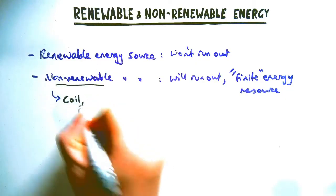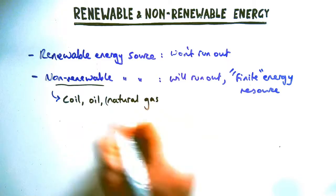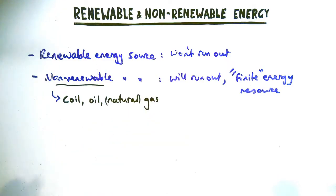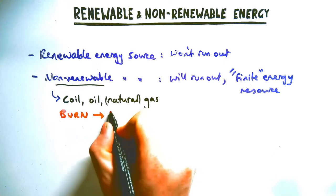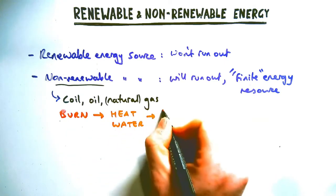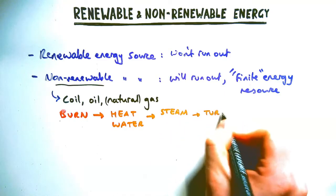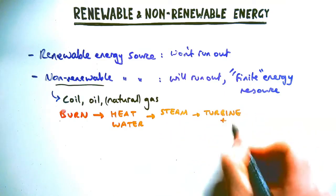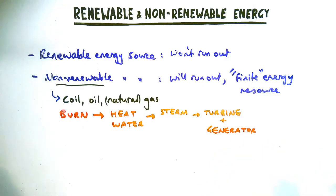Non-renewable energy sources are the traditional fossil fuels: coal, oil, and natural gas. They will eventually run out within 10, 20, 30 years, or a century. At the moment we use them to provide electricity. How this works is you burn the fuel, use it to heat water, which generates steam and then turns a turbine and a generator.